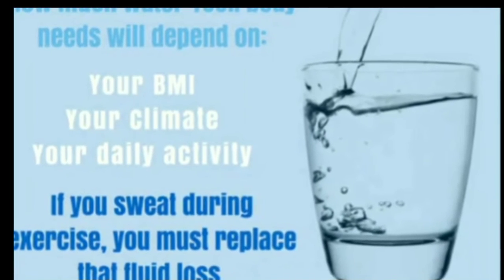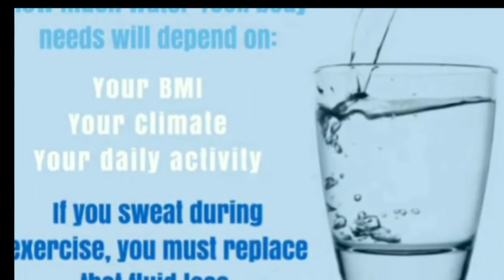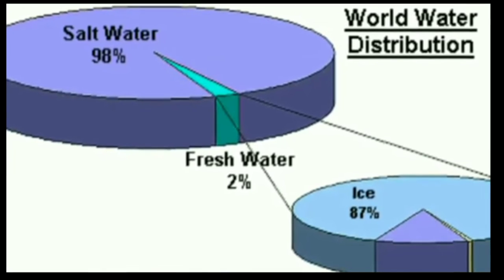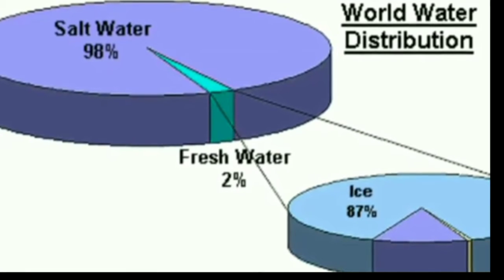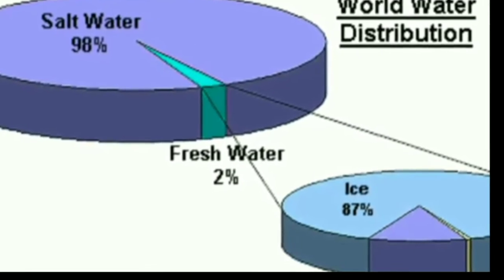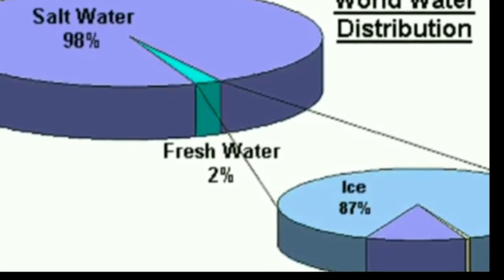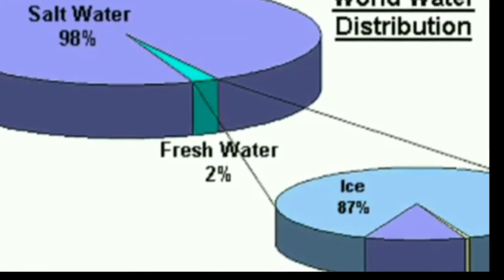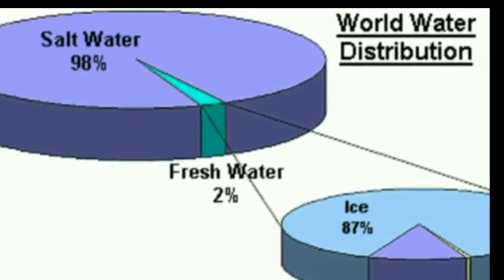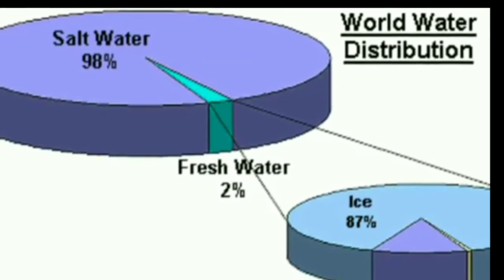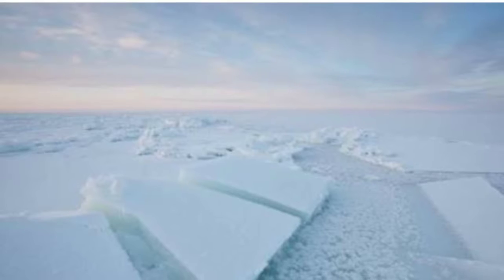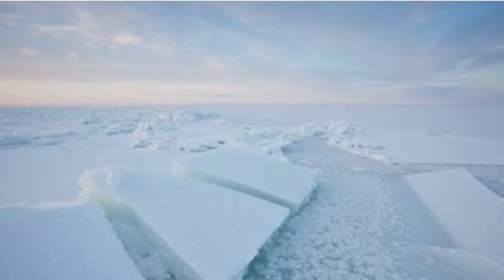Thus, we see that water is very important. Let us now see the distribution of water on the earth. 98% of this water is the salty water of the seas, which cannot be used for agriculture, drinking, or cooking. Some fresh water is in frozen state.